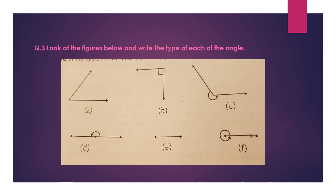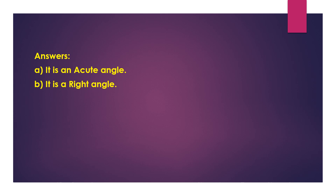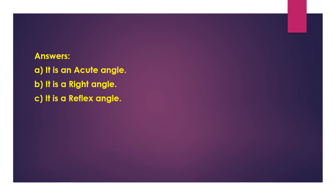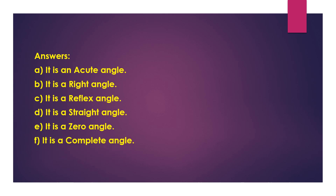Question 3: Look at the figures below and write the type of each angle. A. It is an acute angle. B. It is a right angle. C. It is a reflex angle. D. It is a straight angle. E. It is a zero angle. F. It is a complete angle.